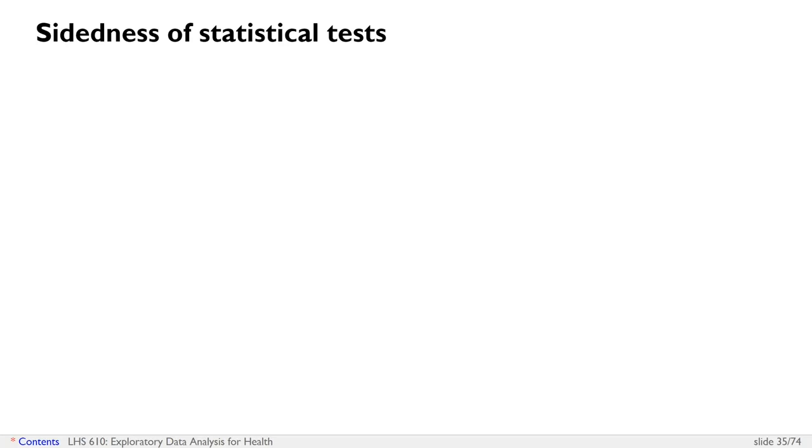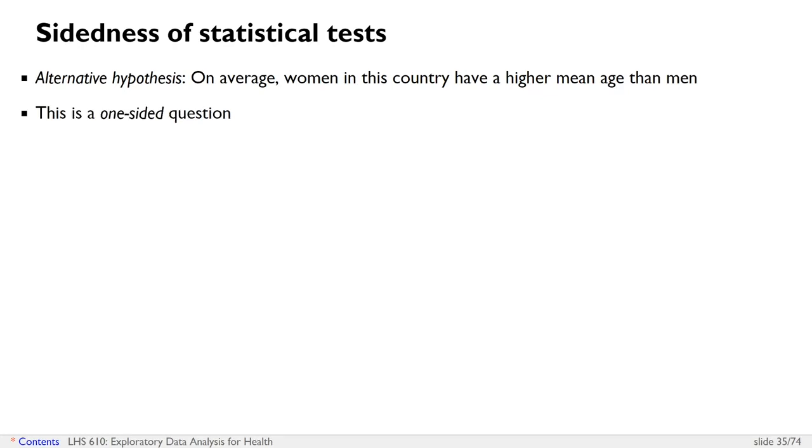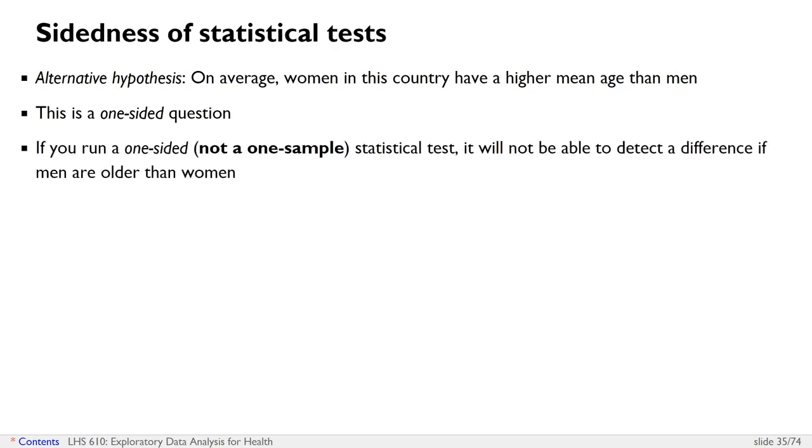Statistical tests do have sidedness to them. And so you might have an alternative or actual hypothesis that on average, women in this country have a higher mean age than men. And this is a one-sided question because what if your data showed that men actually have a higher mean age than women? Wouldn't you want to know that that was the case if that was true in the data?